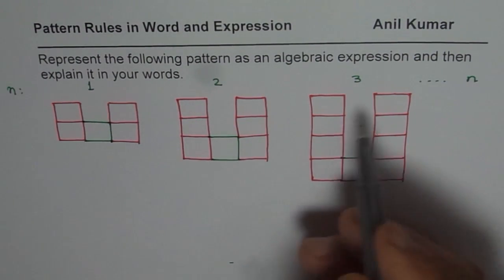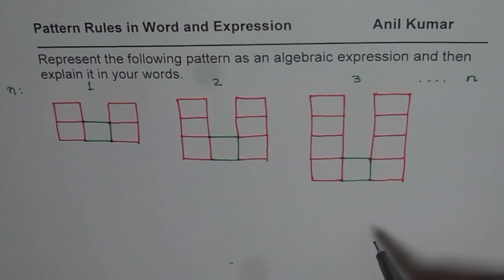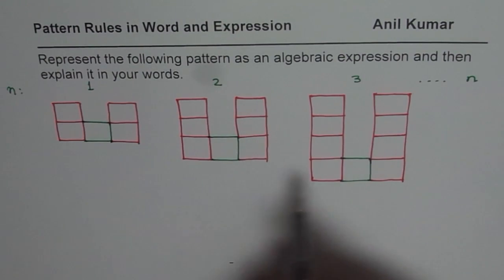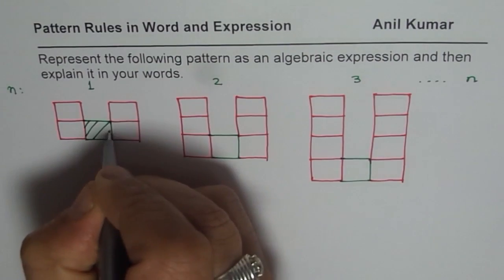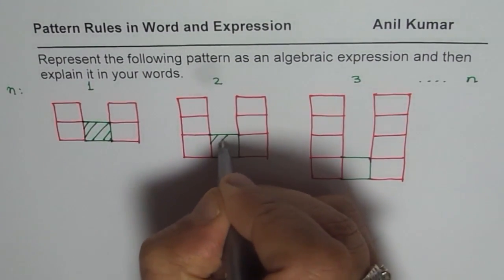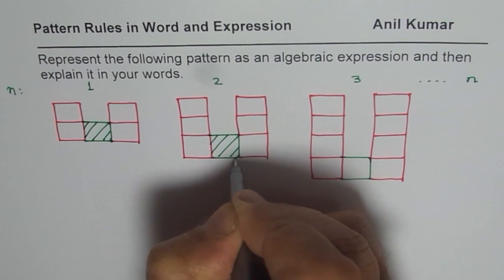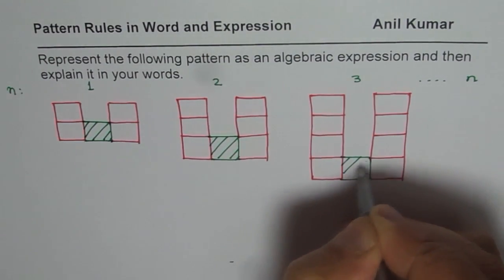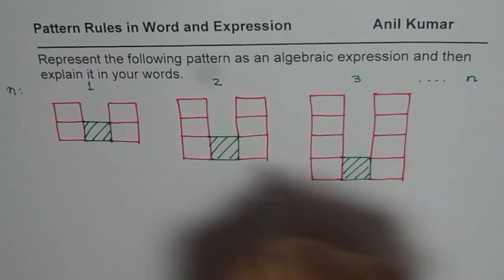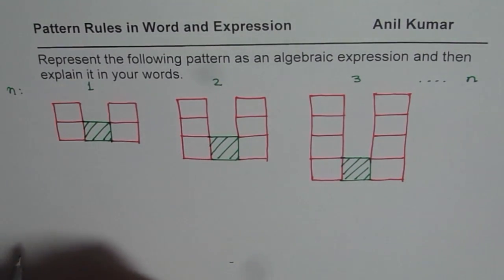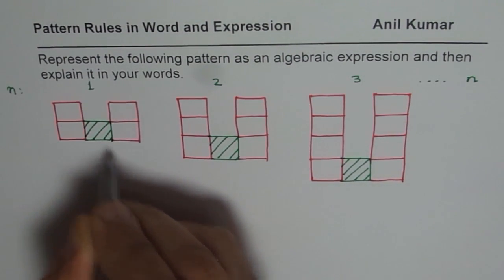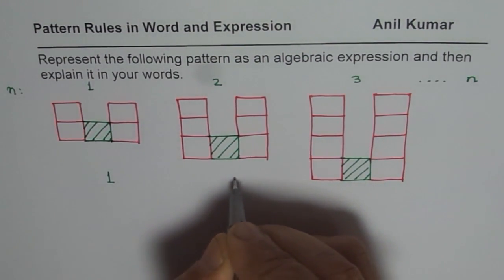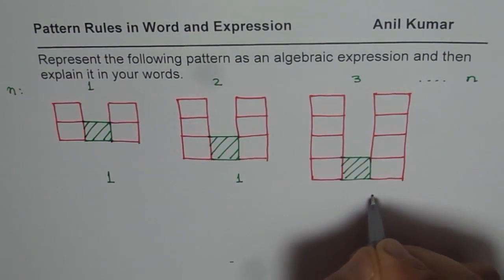As an example, you can continue it for two more figures. Now what do we have here? We observe that one green is common in all, so we can say one green is fixed in each and every pattern. So when we start, we start with one green. We can write one for it — one green is there for each.